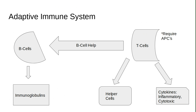T cells require the APCs discussed earlier. Those responses are not strictly antigen-specific, but they release soluble mediators like cytokines. B cell helpers are T cells that work in tandem with the B cell in order to increase the production of antibodies.